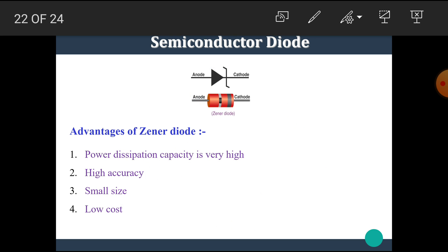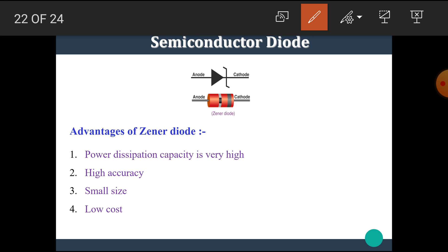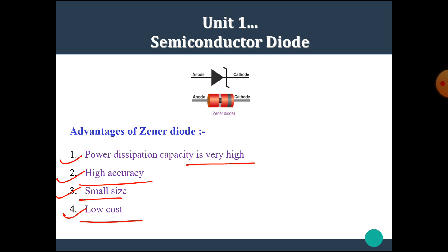Now let's see some advantages of the Zener diode. One key advantage is that we can use the Zener diode in reverse bias mode. The power dissipation capacity of the Zener diode is very high. The Zener diode has high accuracy. The size of the Zener diode is small and the cost is very low.